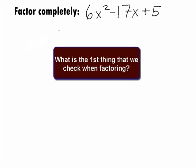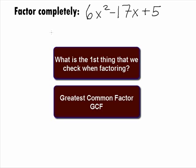What is the first thing that we always check for when we factor? The greatest common factor. In this case, there is not one.